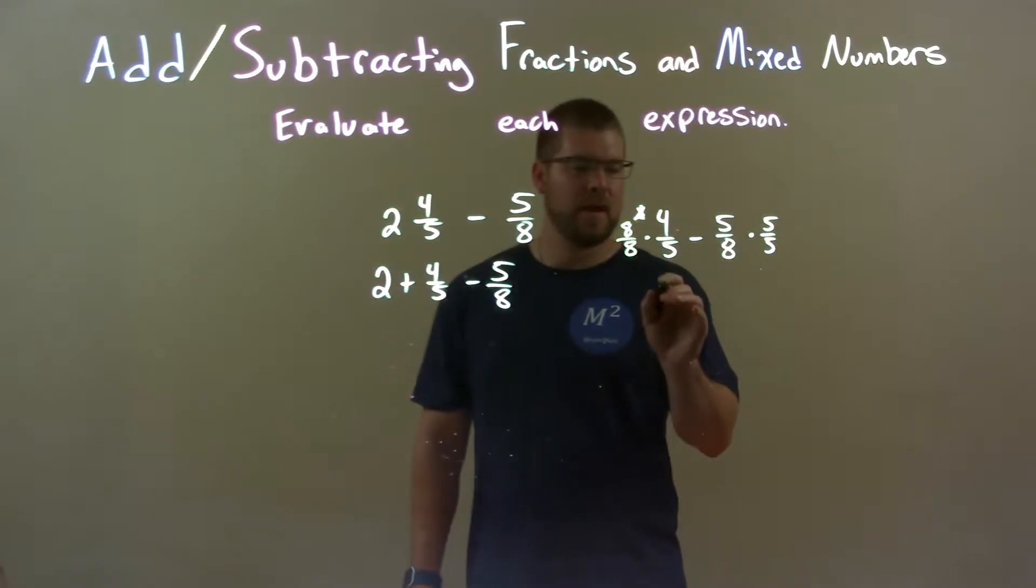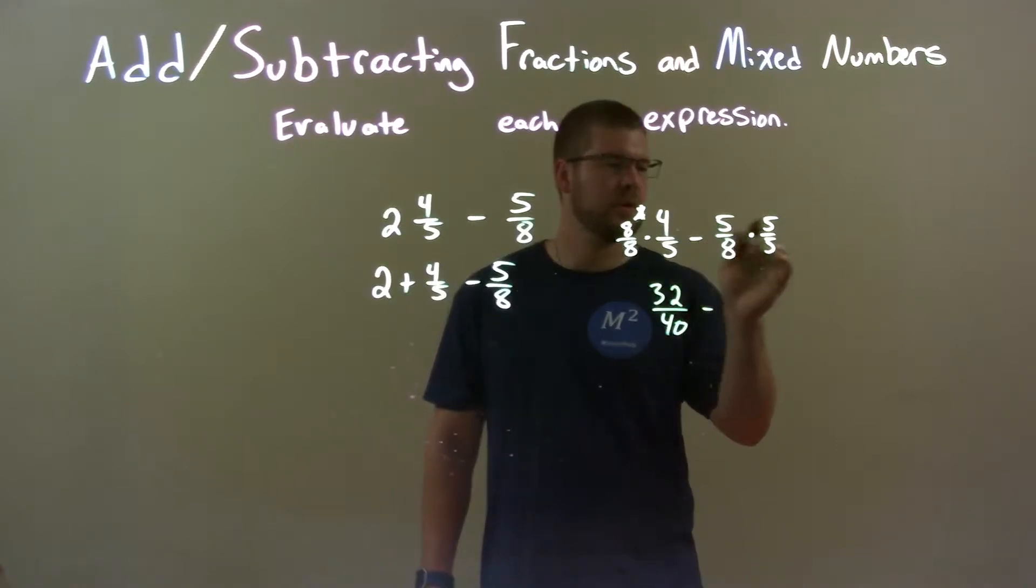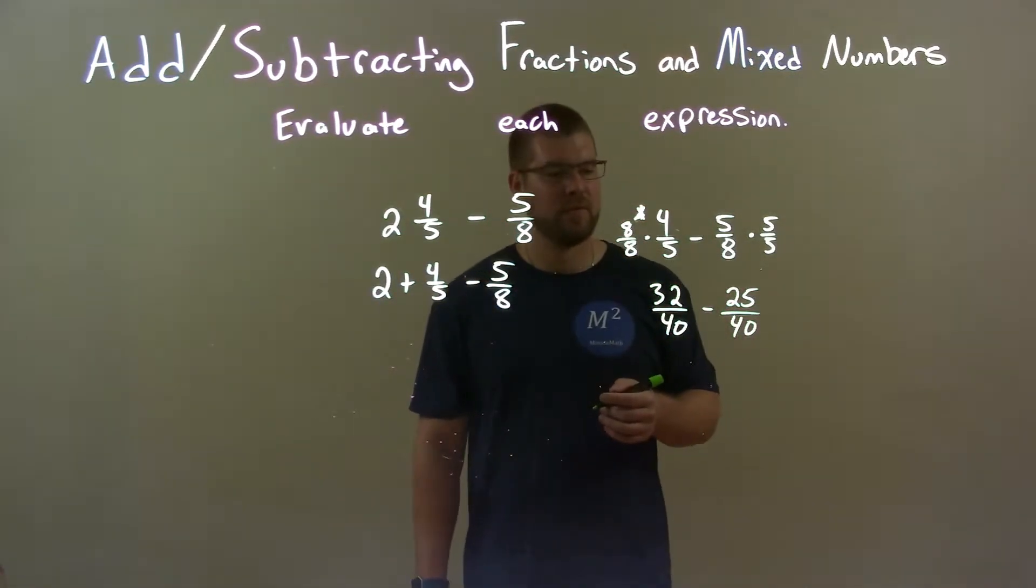So 8 times 4 is 32 and 8 times 5 is 40. Then we have 5 times 5 is 25 and 8 times 5 is 40. So now we have 32/40 minus 25/40.